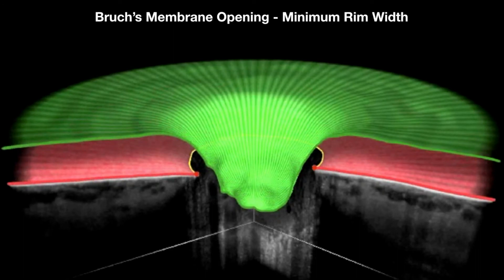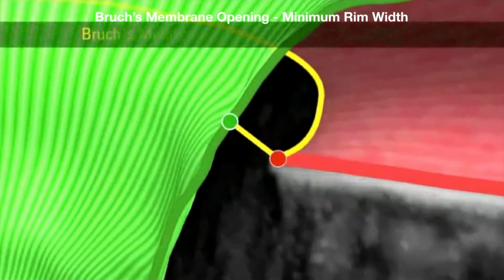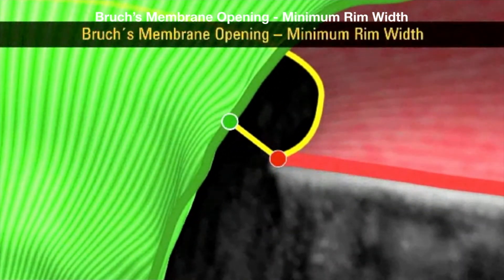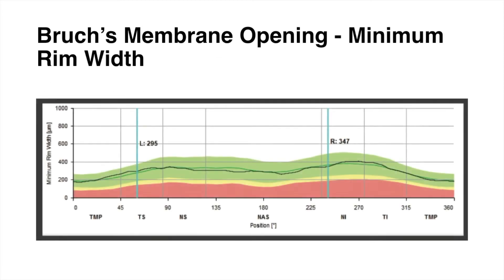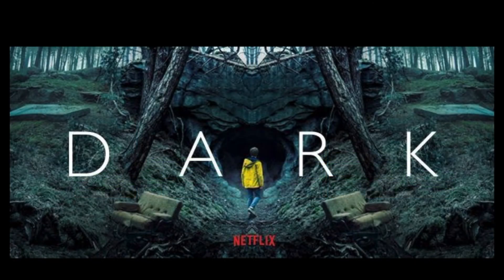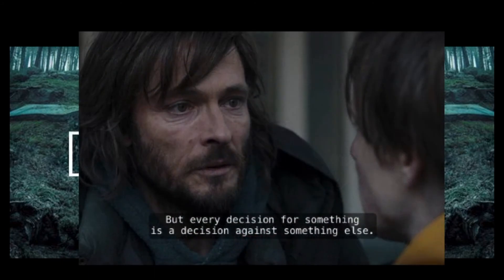Bruch's membrane opening minimum rim width is the smallest distance between the Bruch's membrane opening and the internal limiting membrane. The BMO minimum rim width follows the ISNT rule — it is thicker in the inferior and superior quadrants. Every decision for something is a decision against something else, so let us see why minimum rim width was chosen over horizontal rim width.